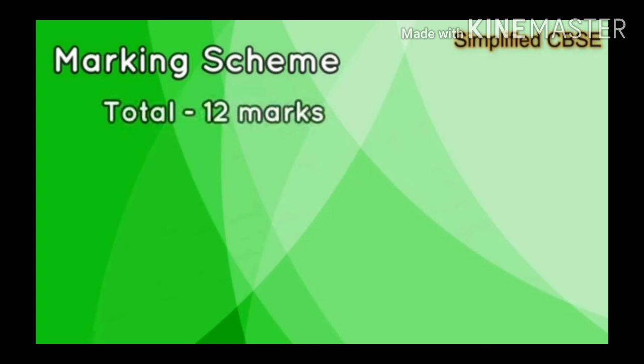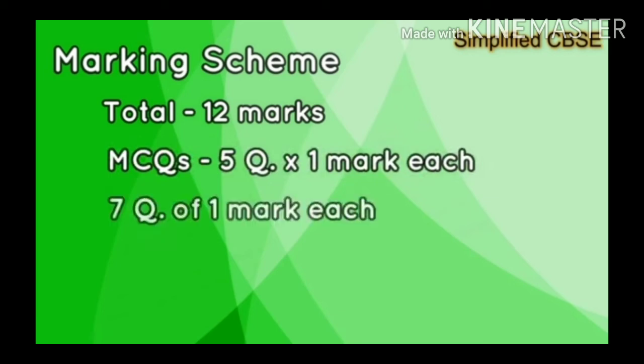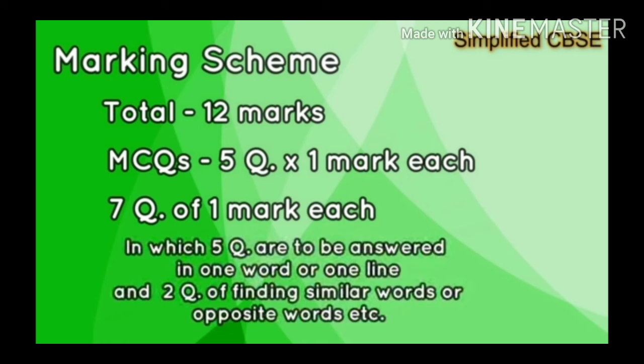Now we are going to discuss the marking scheme of the unseen passage. It carries 12 marks and is divided into 3 parts. The first part carries 5 questions, meaning it is worth 5 marks. Another part is also worth 5 marks. The last part, where you have to find synonyms or antonyms of given words, is worth 2 marks — totaling 12 marks, which will play a vital role in your percentage.